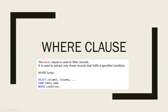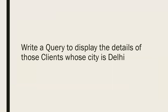To execute a query we need a WHERE clause. A WHERE clause is used to filter records — it extracts only those records that fulfill a specified condition. In the syntax: SELECT is for display, in front of SELECT we write the column names we want to display (or * for all columns), then FROM followed by the table name, then WHERE followed by the condition, and finally a semicolon to terminate the query.